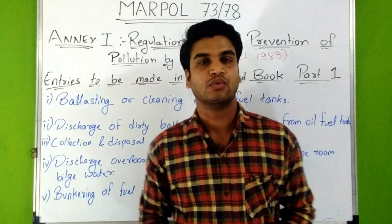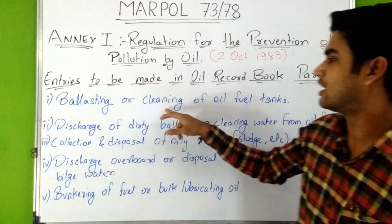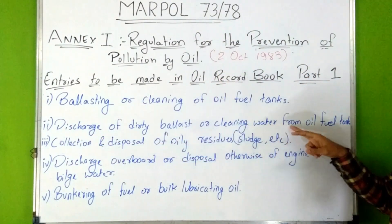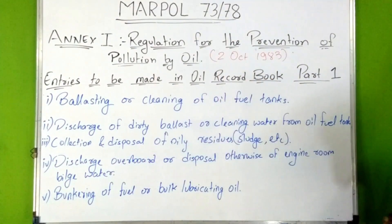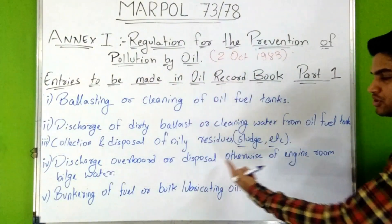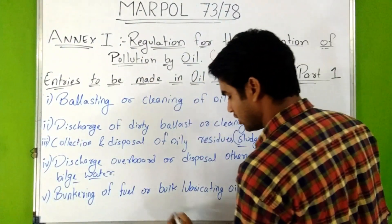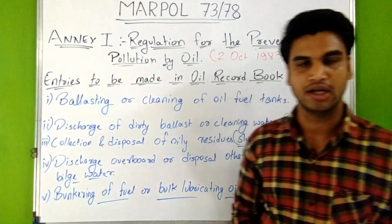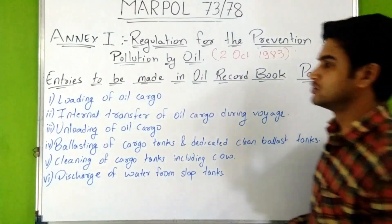Entries to be made in Oil Record Book Part 1 include: ballasting or cleaning of oil fuel tanks; discharge of dirty ballast or cleaning water from oil fuel tanks; collection and disposal of oily residues such as sludge; discharge overboard or disposal otherwise of engine room bilge water; and bunkering of fuel or bulk lubricating oil.